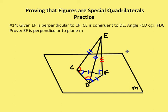Now I have two triangles congruent by SSS: triangle EFD and triangle EFC. Since I know EFC is a right angle, I can say by CPCTC that EFD is also a right angle. So if EFC is a right angle and EFD is a right angle, then EF is perpendicular to line M — because if one line is perpendicular to two lines in a plane, it is perpendicular to every line that passes through the foot, the point of intersection with plane M.